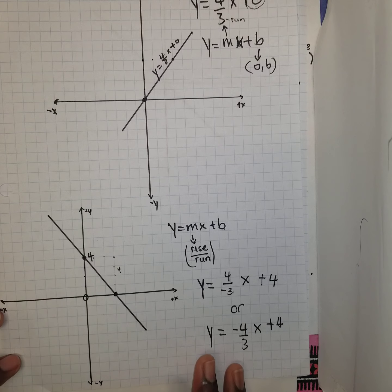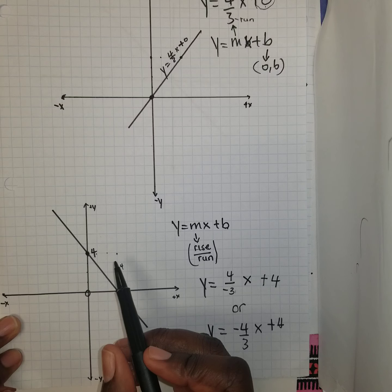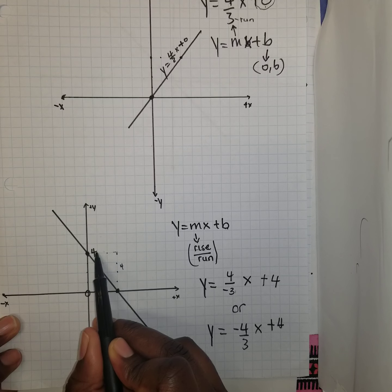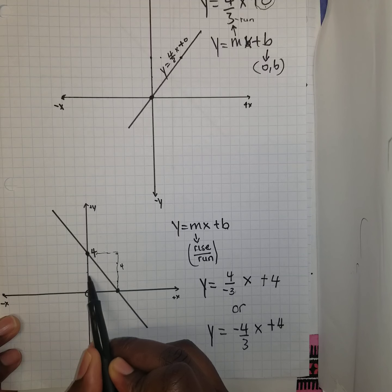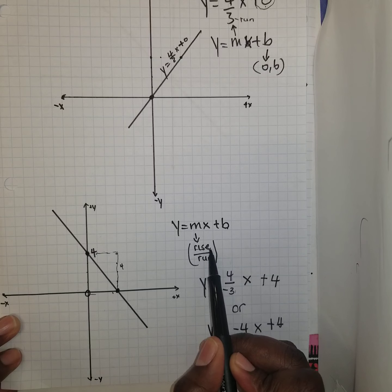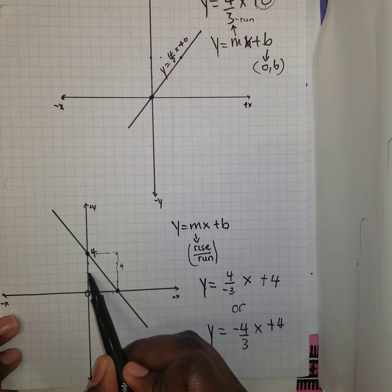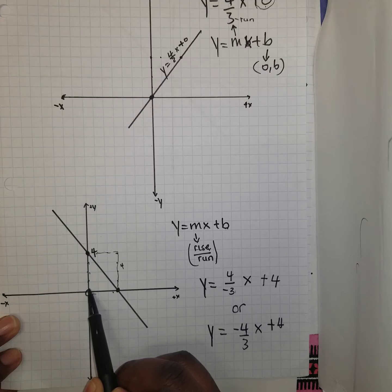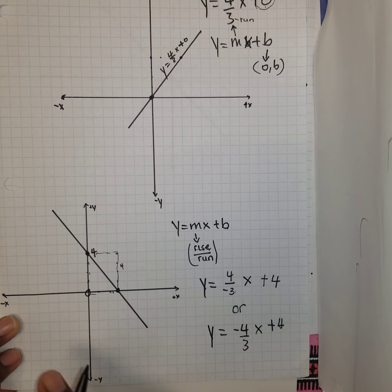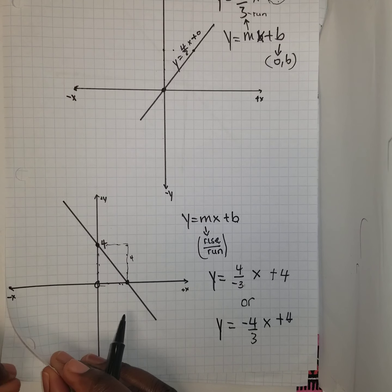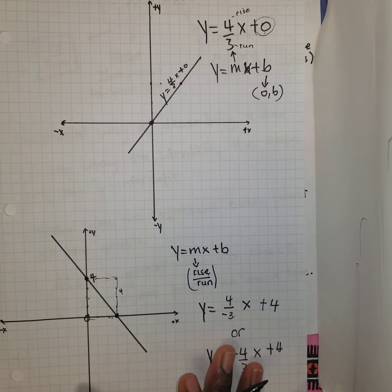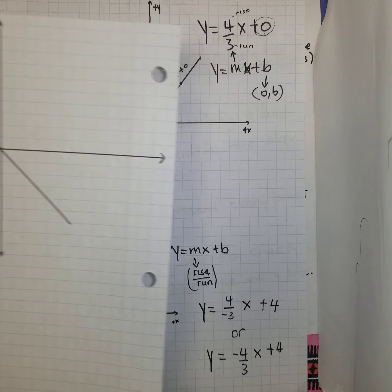You could have chosen to form your triangle below the line — going down 1, 2, 3, 4 for the rise, and then moving horizontally 1, 2, 3 for the run — which gives you back the same answer. So it's up to you whether you draw the triangle above or below the line.